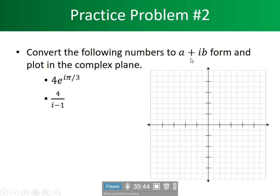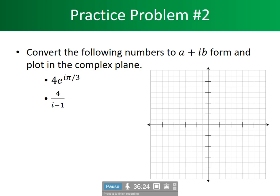Convert the following numbers to rectangular coordinate form and plot in the complex plane. We have 4·e^(jπ/3): r = 4, angle = π/3 = 60 degrees. The new form is 4·(cos 60° + j·sin 60°). cos 60° = 0.5, sin 60° = 0.866. So 4 × 0.5 = 2 and 4 × 0.866 = 3.464. The rectangular form is 2 + 3.464j.